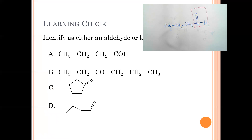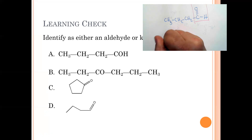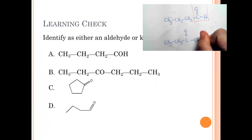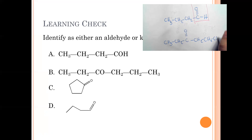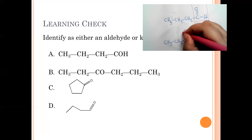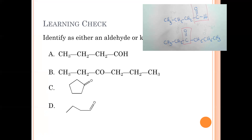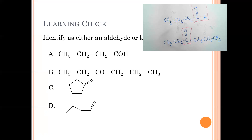In example B, the CO group is in the middle. If we redraw B: CH3, CH2, C double bond O, CH2, CH2, CH3 — that CO group in the middle means this is a ketone. So A is an aldehyde, B is a ketone.